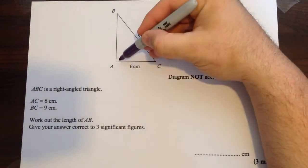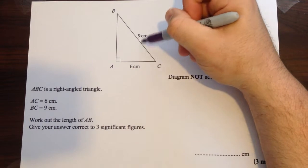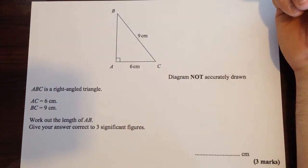So, quickly check the triangle. We know the right angle, we don't know that angle, we don't know that angle, but we do know these two sides, so it's got to be Pythagoras.